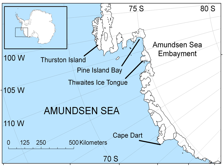The Norwegian Expedition of 1928–1929 under Captain Nils Larsson named the body of water for the Norwegian polar explorer Roald Amundsen while exploring this area in February 1929. The sea is mostly ice-covered, and the Thwaites Ice Tongue protrudes into it.